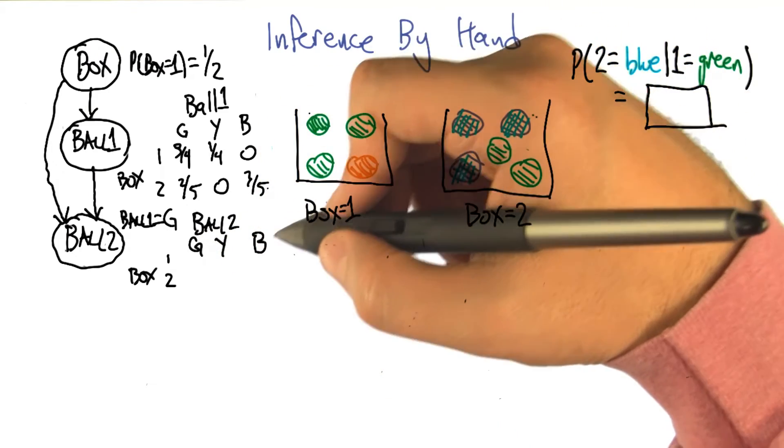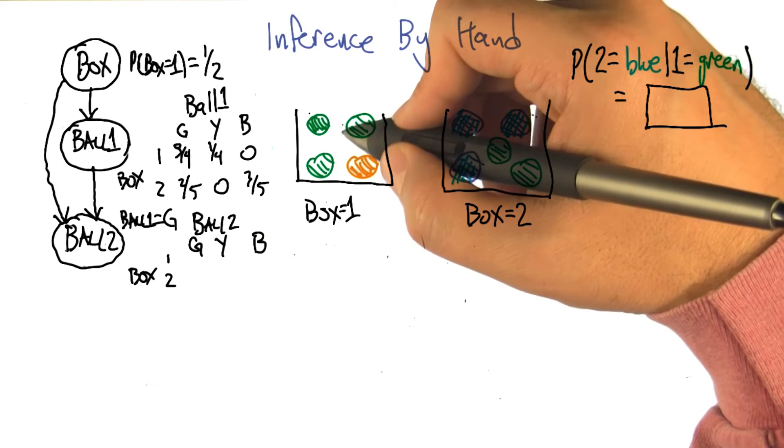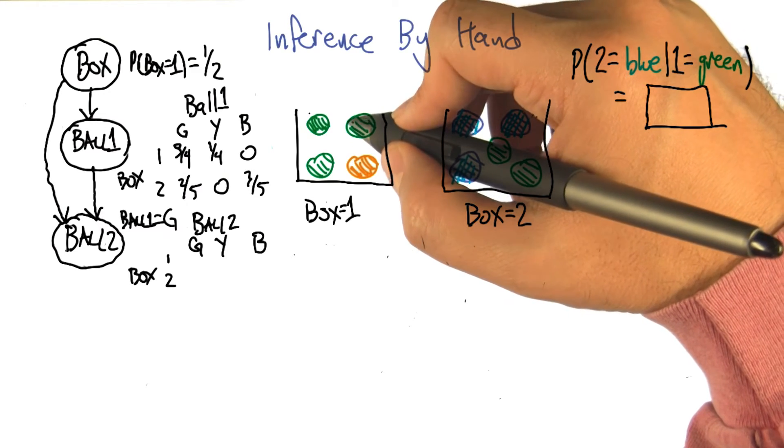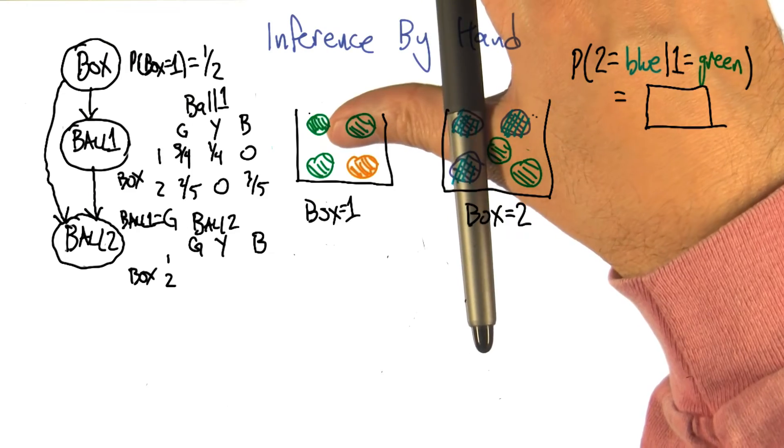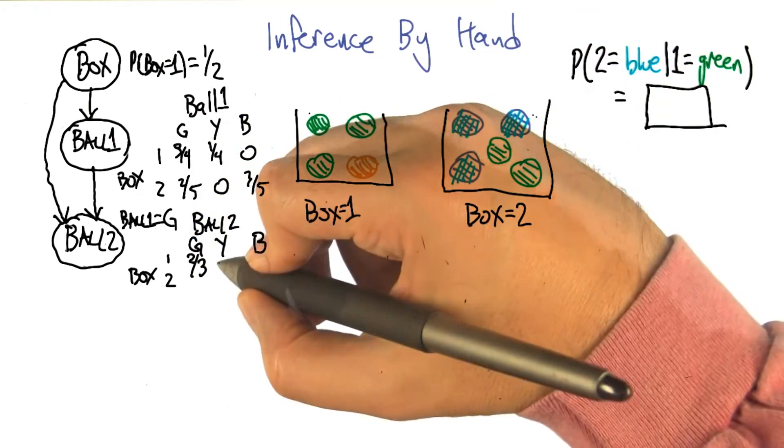So now ball two, in the case where we're drawing from box one, probably that's green. In the case where the first ball had been green, it leaves just two out of three, right? And one out of three yellow and no blue.